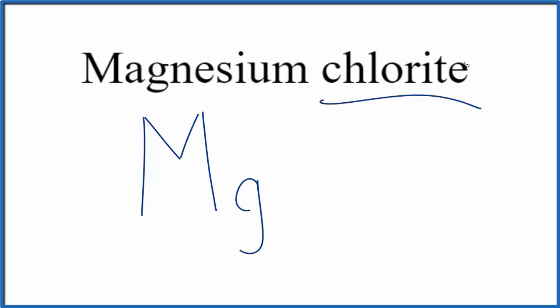For chlorite here, you won't find that on the periodic table. It ends in I-T-E, so this is a polyatomic ion. You either memorize that the chlorite ion is ClO2 with a charge of one minus, or if you're allowed, you look it up on a table of polyatomic ions.